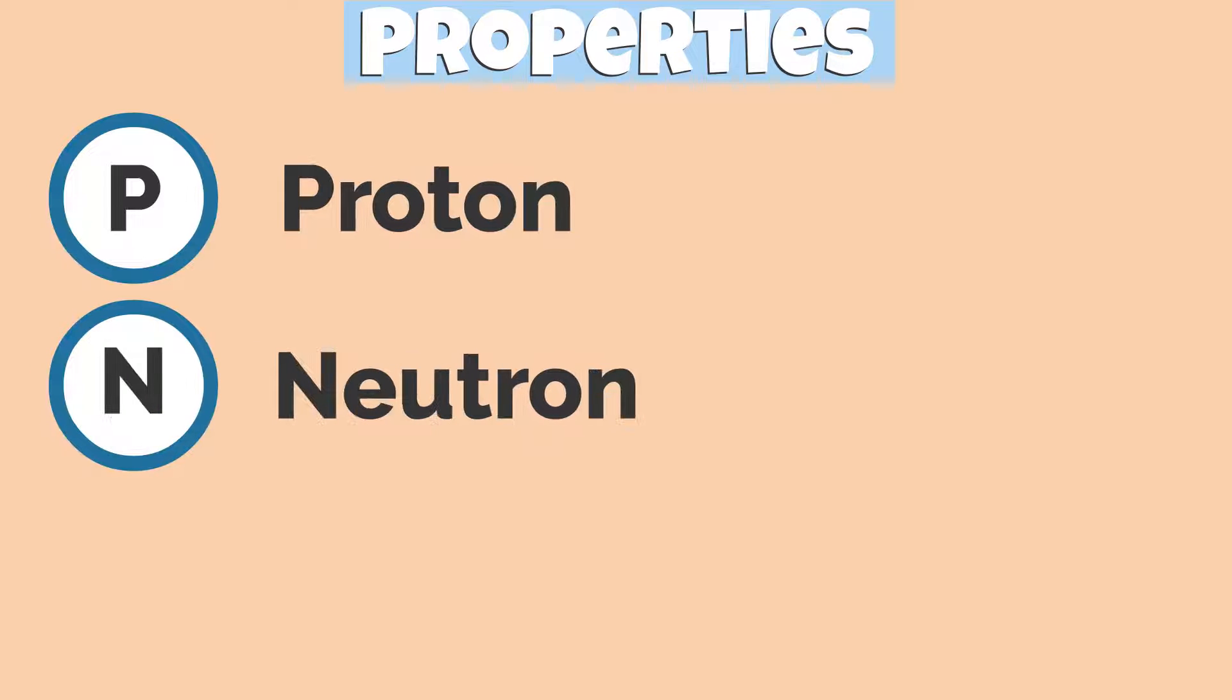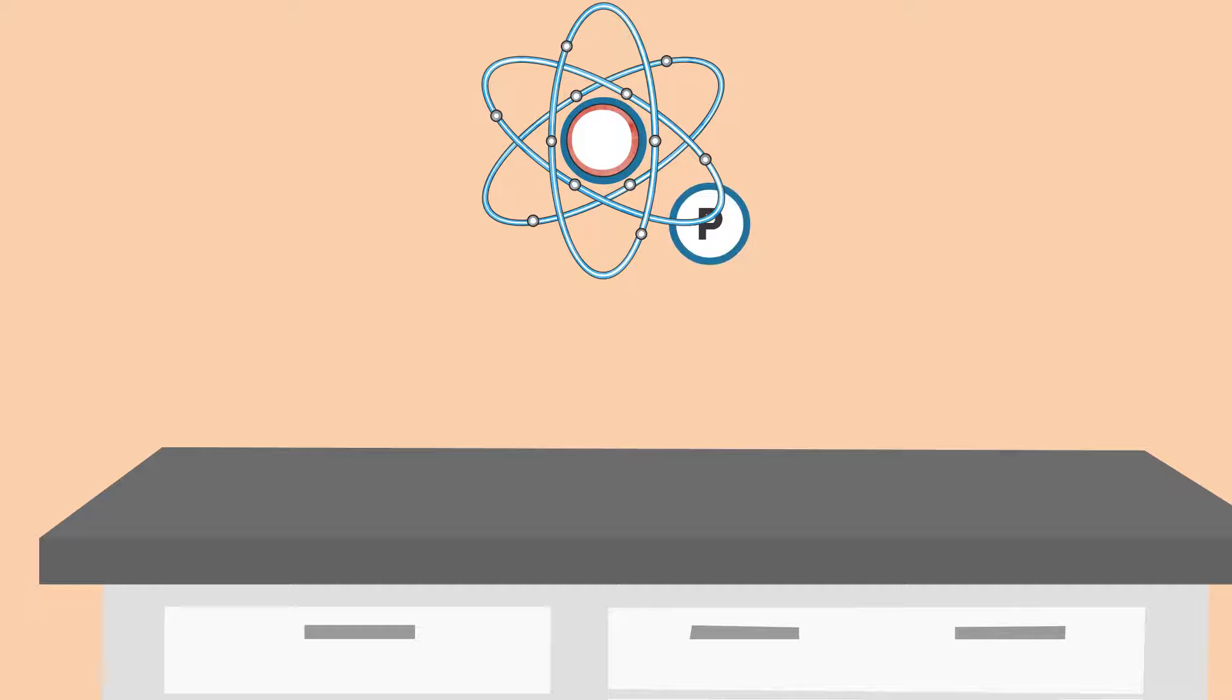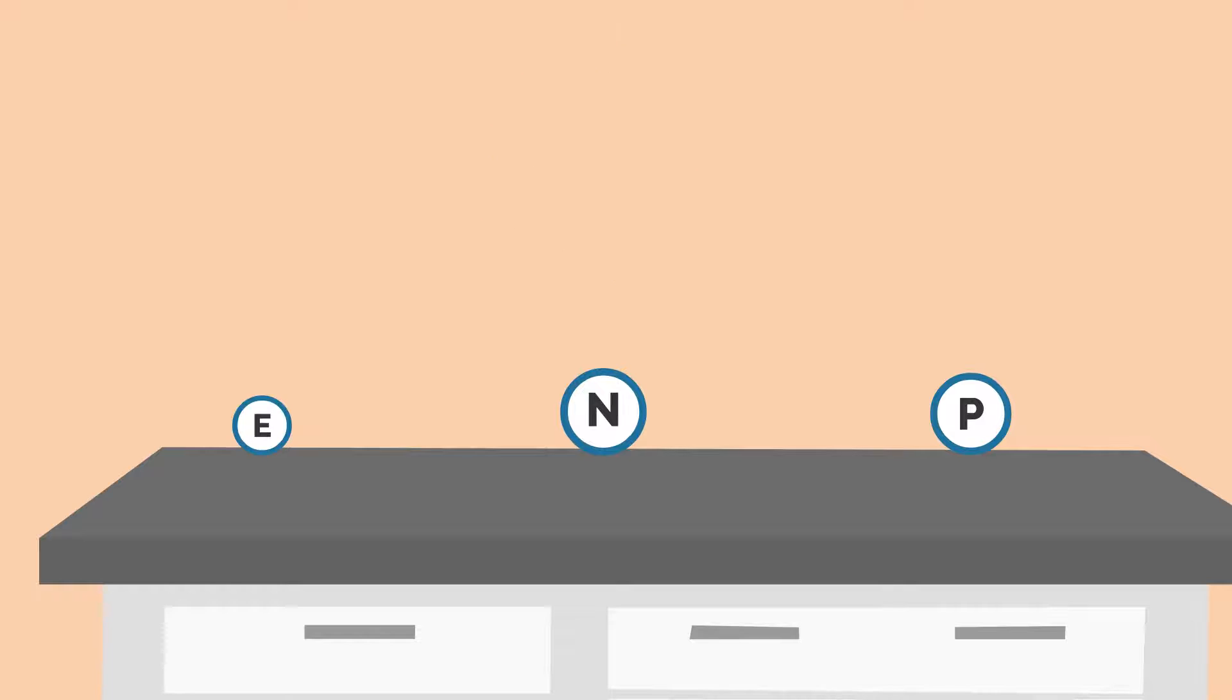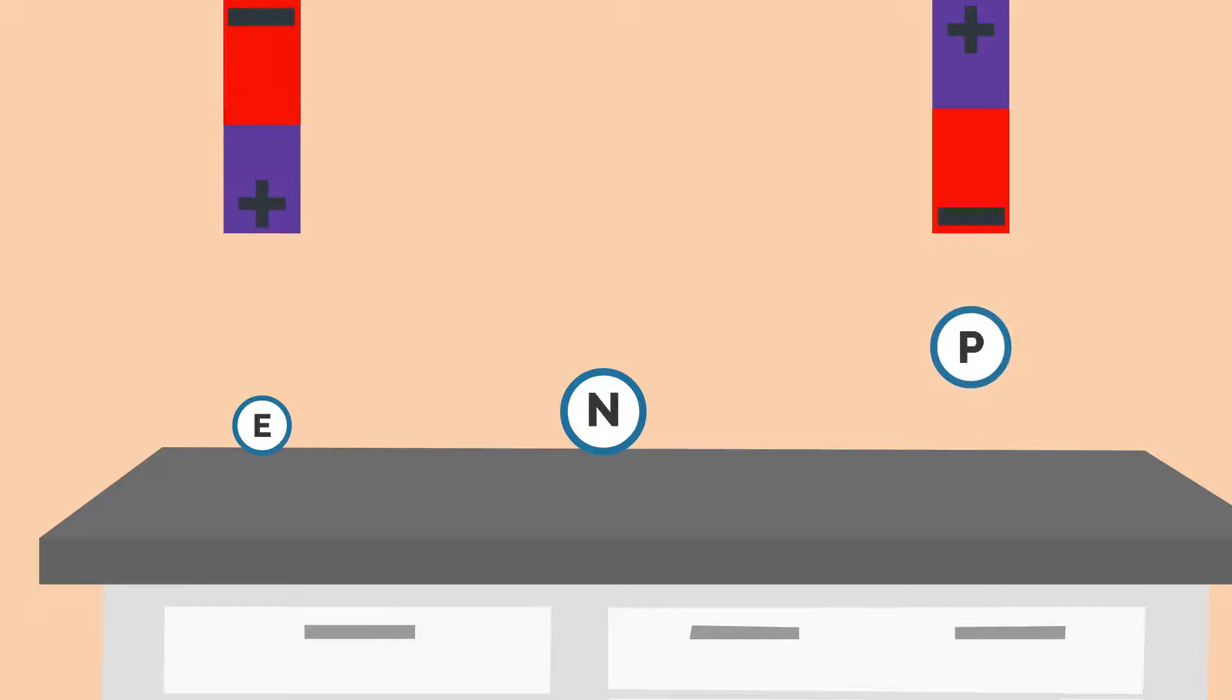Let's look at the properties of protons, neutrons, and electrons. If we were to separate protons, neutrons, and electrons and place them on a table, and were to bring a magnet close to these subatomic particles, we would see that the negative pole of the magnet would attract protons, and the positive pole would attract electrons. Neutrons wouldn't respond to the magnet.